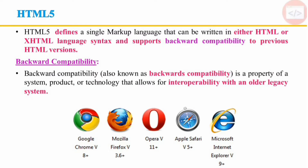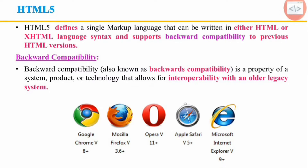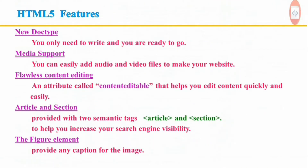Backward compatibility, also known as backwards compatibility, is a property of a system, product, or technology that allows for interoperability with older legacy systems. HTML5 is designed as much as possible to be backward compatible with existing browsers. New features have been built on existing features and allow you to provide fallback content for older browsers. HTML5 differs from previous versions in the features that are most useful in web application development.